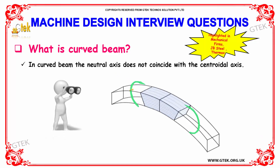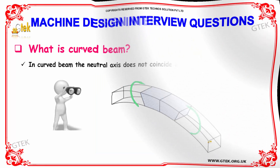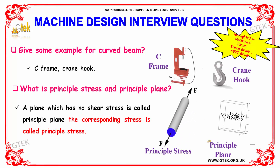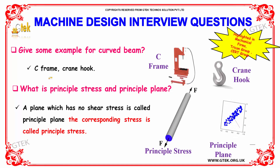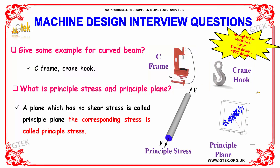What is a curved beam? In a curved beam, the neutral axis does not coincide with the centroidal axis. Examples of curved beams are the C-frame and crane hook, as shown in the diagram.